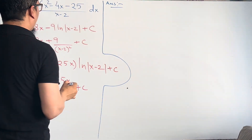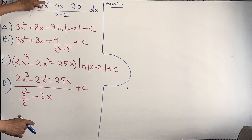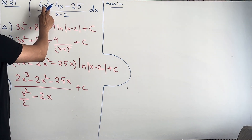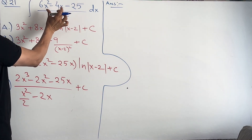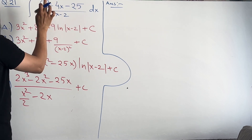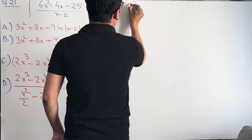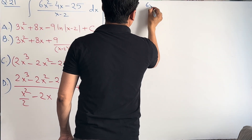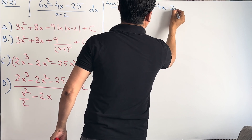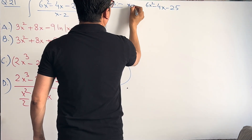We can see the degree of x² in the numerator is 2, and here in the denominator we have degree 1. So since the degree of the numerator is greater than the degree of the denominator, I'm going to divide 6x² - 4x - 25 by (x - 2) using polynomial long division.